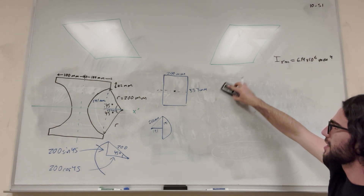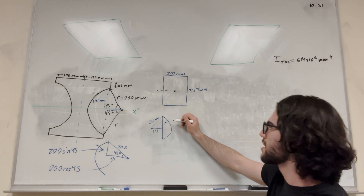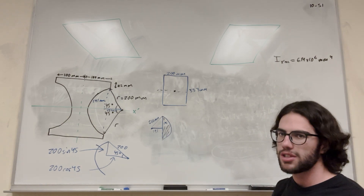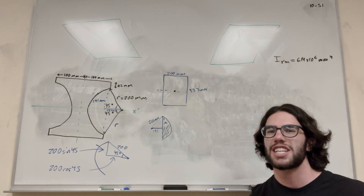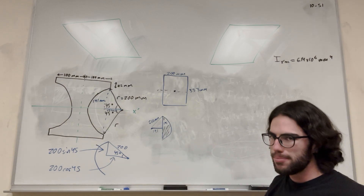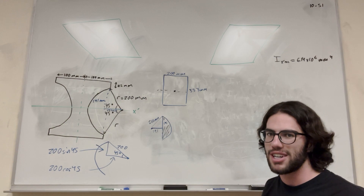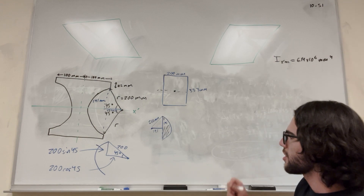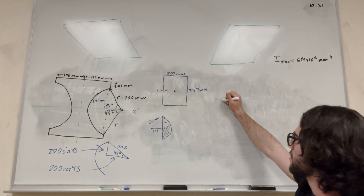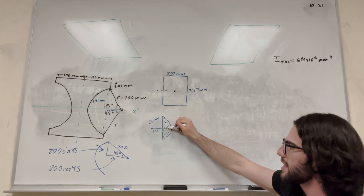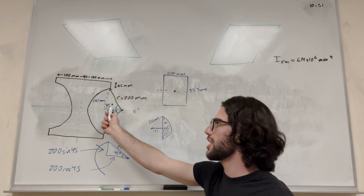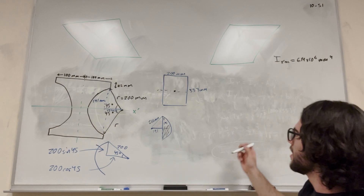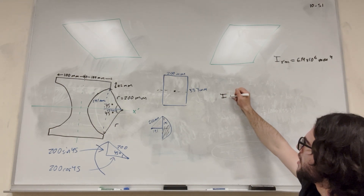If we're going to use that formula again, the problem is it's hard to find a formula for this shape — it's not just a simple part of a circle, it's a weirdly cut-out part. There's not really a formula in the back of the book you can find. So let's try to find it another way. We know it lies on the centroid, so the centroid of this shape with respect to the x-axis is on the line, and we can use the integral formula: I of x prime equals the integral over the area of y squared dA.